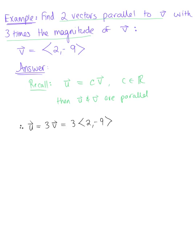We'll double check this to make sure this is holding true. The magnitude of vector V is defined by our distance formula. We have 2² plus (-9)², which gives us the square root of 4 plus 81, which is equal to the square root of 85.